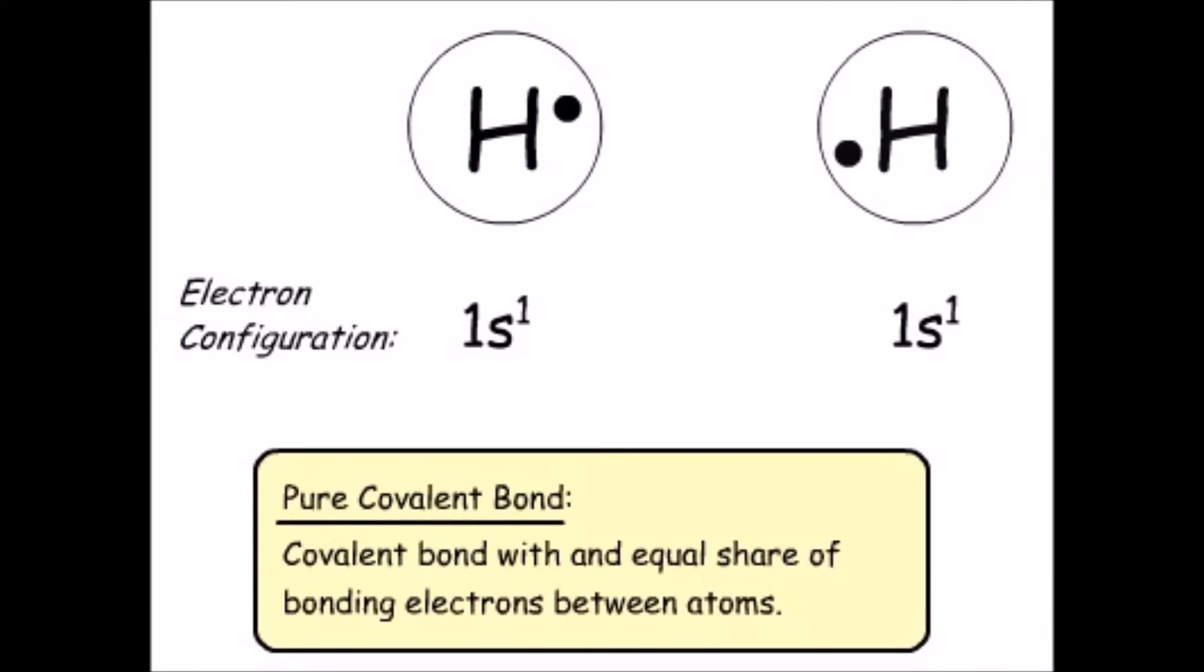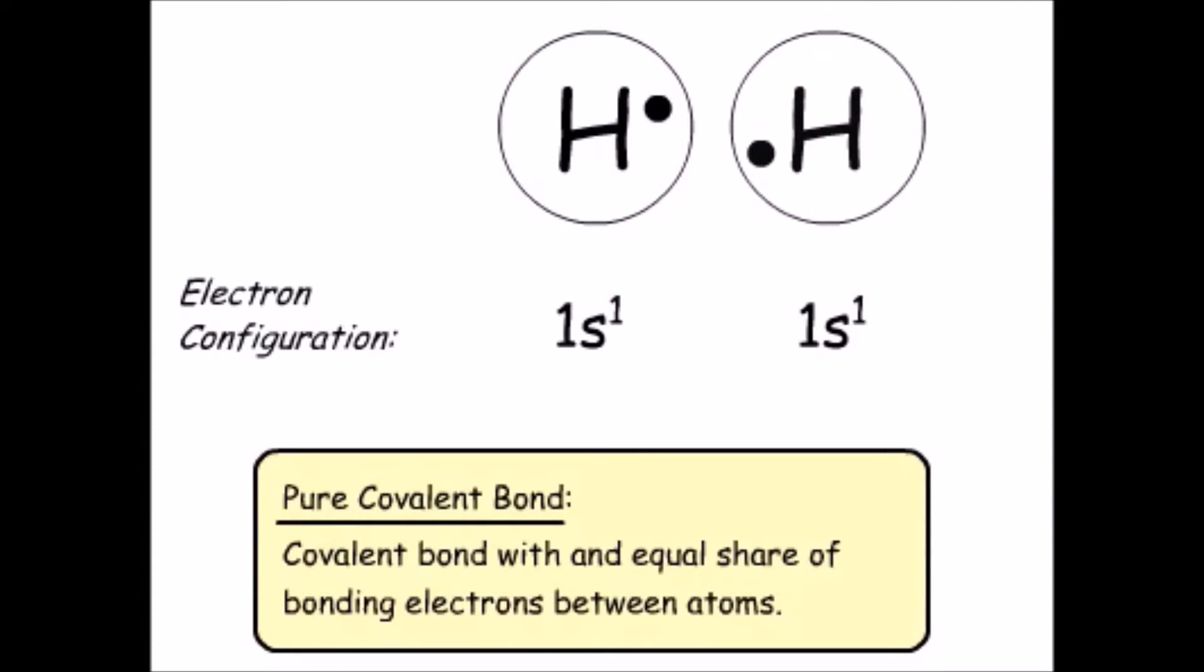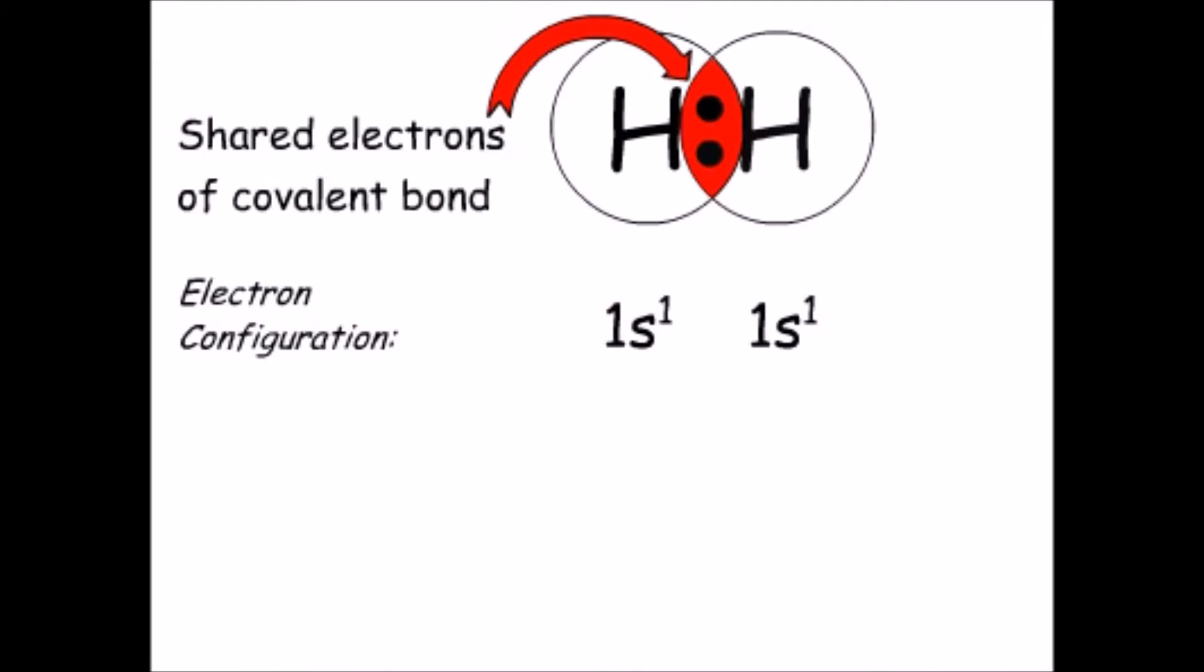This is what we have in the diatomic hydrogen molecule. Each hydrogen atom contributes its single 1s electron to the bond. Once the hydrogen molecule is formed, both electrons are shared equally by the two hydrogen atoms. That gives each hydrogen atom a stable, closed-shell, noble gas-like configuration, like that of helium.